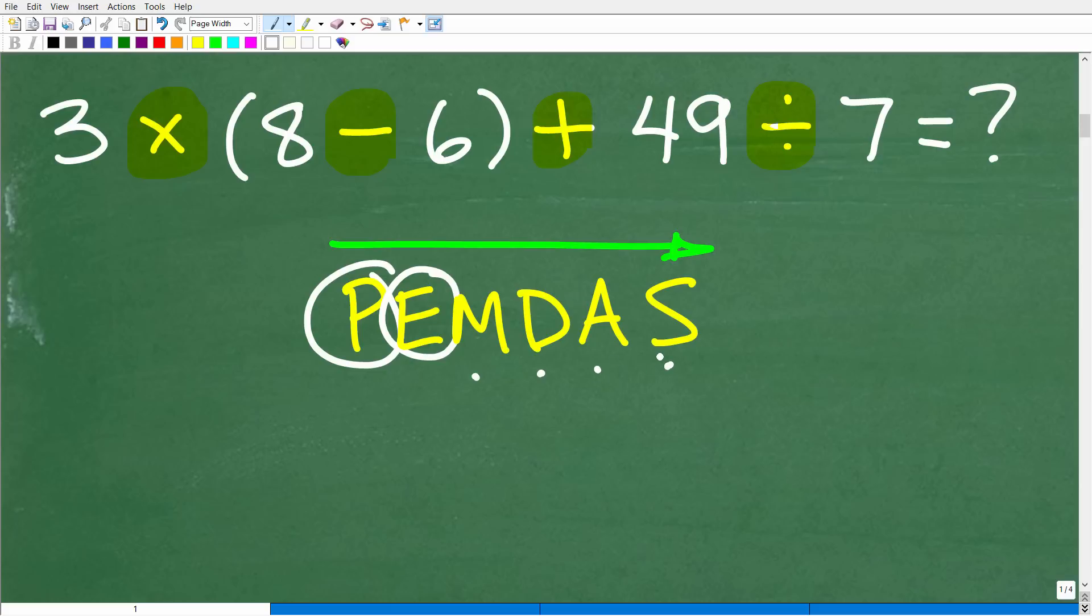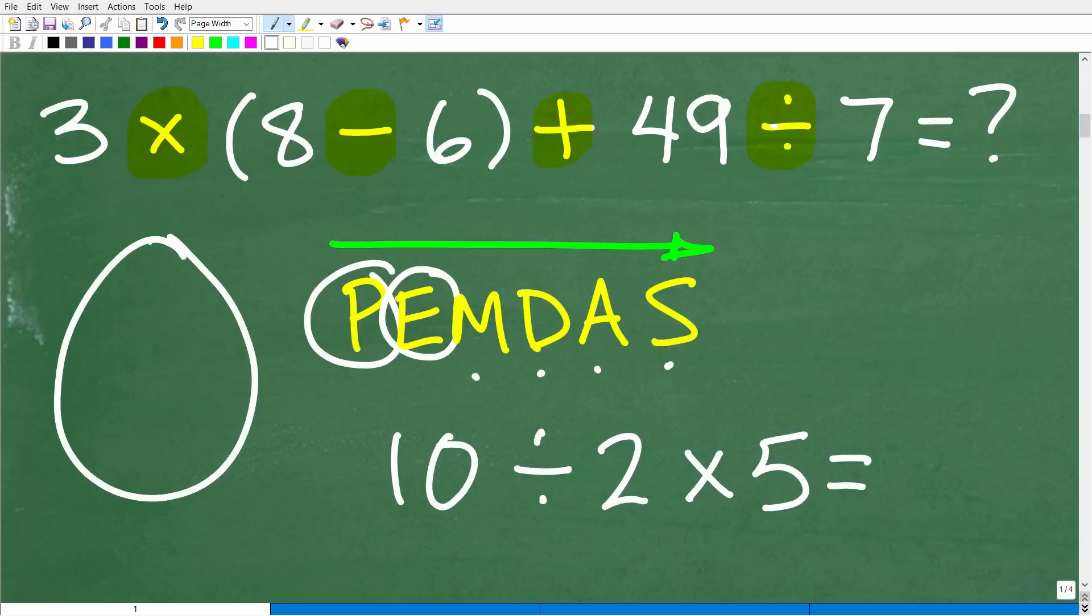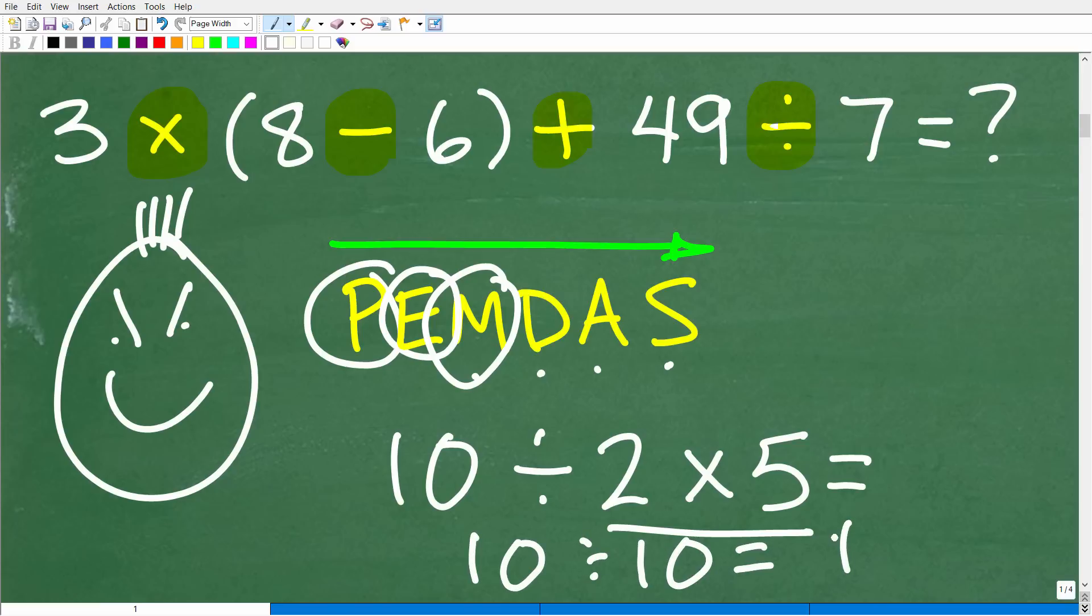All right, so I got a pop quiz here for you. So 10 divided by 2 times 5. Now, without a calculator, what is the answer to this question? Now, I know a lot of you are like, hey, Mr. YouTube Math Man, I know the answer because I'm looking at your little checklist here. So let's see here. M is multiplication. That's going to come next. So 2 times 5 is 10. So you have 10 divided by 10. The answer is 1.